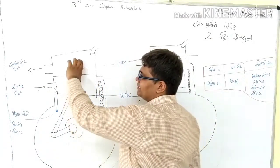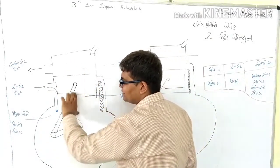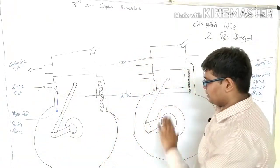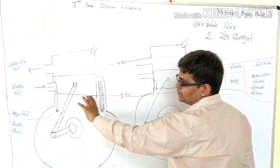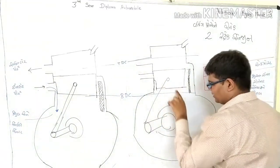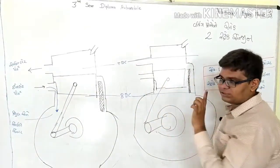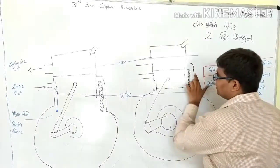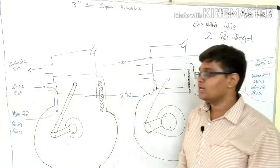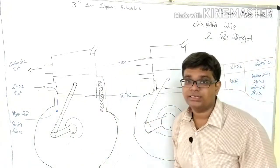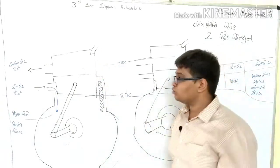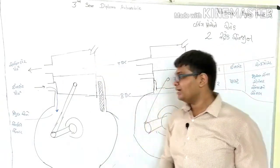The piston moves between TDC and BDC. When the piston reaches TDC, the mixture is compressed and the cylinder is ready. The piston is at TDC — there is a spark, and that produces the power stroke.